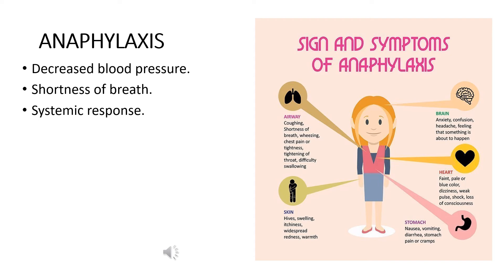The brain system is also affected because the person is struck with anxiety, confusion, headache, and a feeling that something is about to happen — the person is very delusional. Next, the cardiovascular system is also affected because the heart is affected: blood pressure is decreased, there is loss of consciousness, dizziness, and faint or pale or blue coloring of blood, meaning oxygen is reaching the heart in a very little amount and blood is not reaching the heart in an efficient amount.